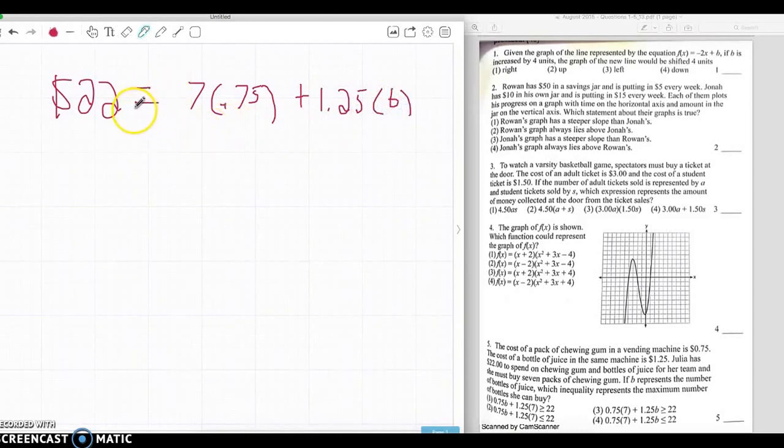So we want an inequality, so we can't have an equal sign. If she can only spend $22, we know that it has to be less than or equal, because she cannot go over $22. So it cannot be 1 or 3. We're going to add them together, and we know 7 times 0.75 is the chewing gum, because she needs 7 and it's 75 cents. Since we have our equation, $22 is less than or equal to 7 times 0.75 plus 1.25B, which gives us the answer of 4. And that is questions 1 to 5.